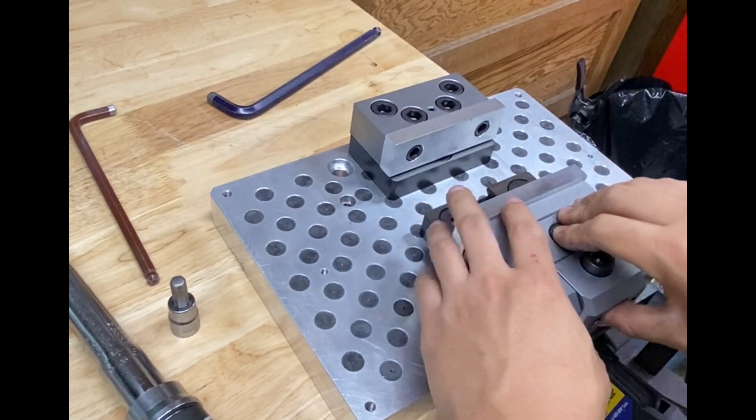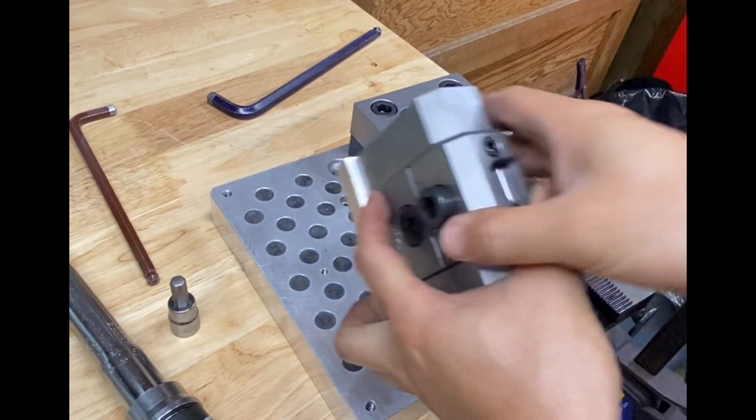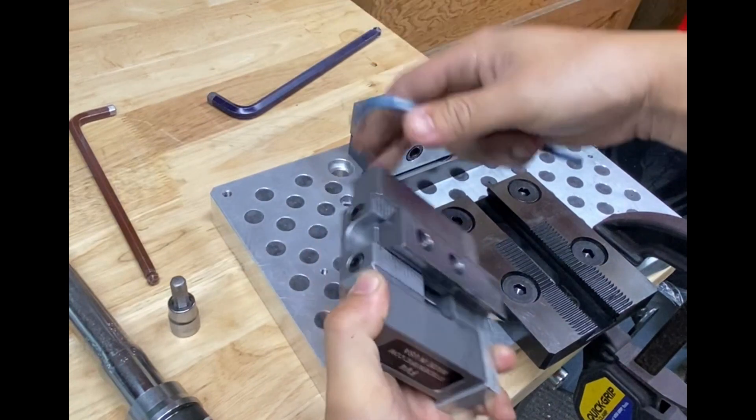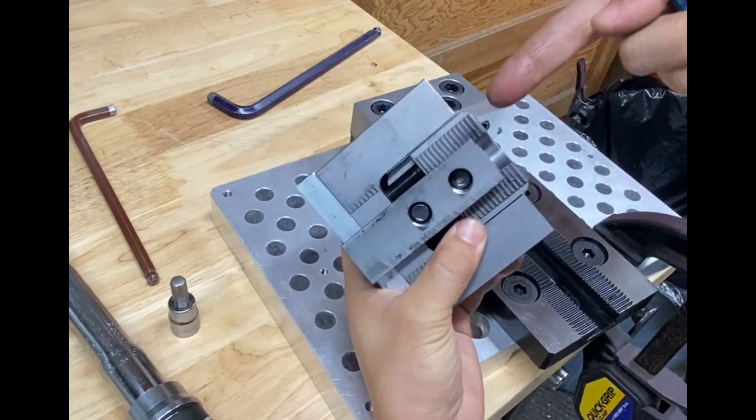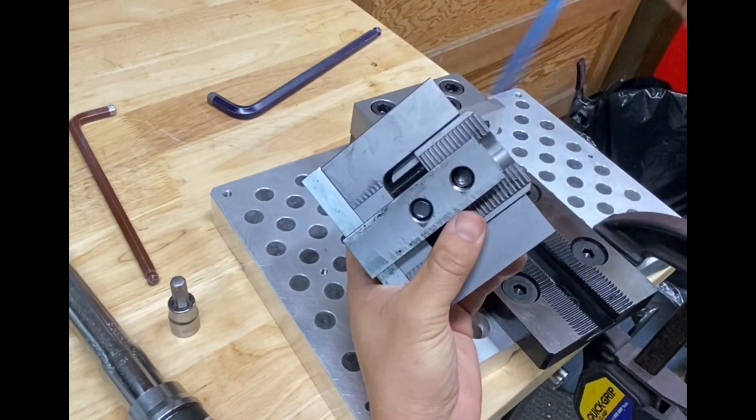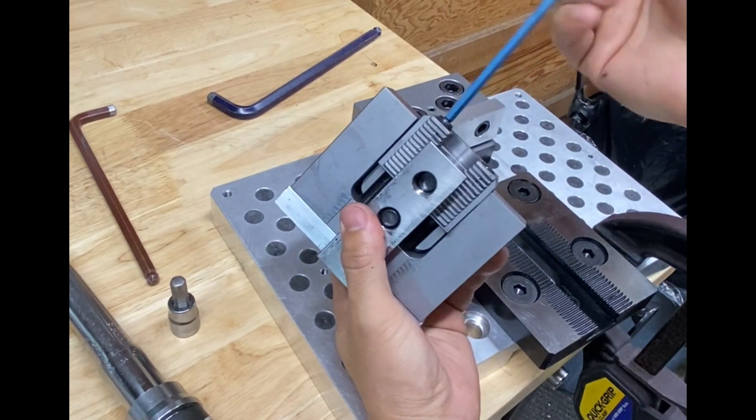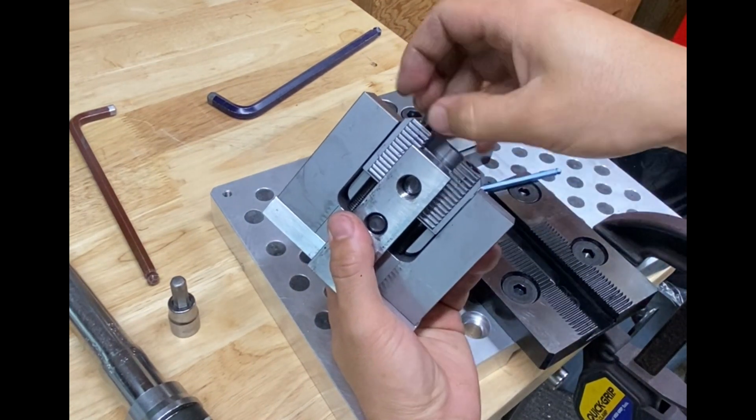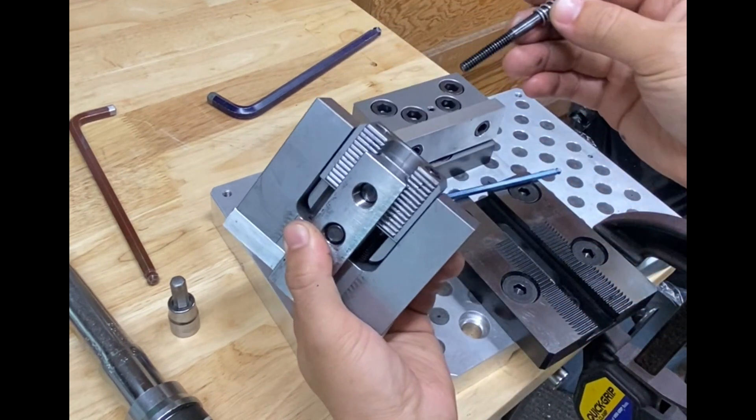Some people have asked what are these back screws for, and I'll show you in a minute. Basically if we look underneath, these screws go all the way to the moving jaw.